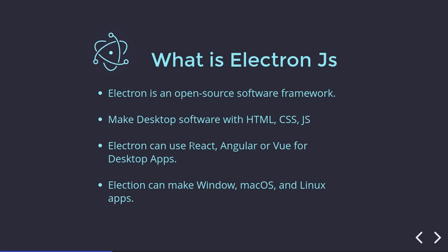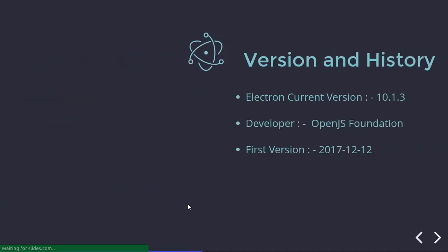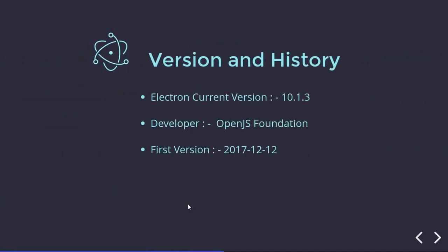We can also use React, Angular or Vue with ElectronJS to make desktop applications. ElectronJS can make applications for Windows, Mac OS and Linux. The current version is 10.1.3 and this is owned by the OpenJS Foundation.